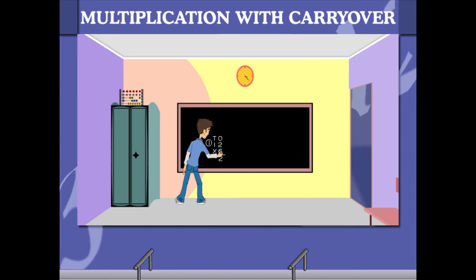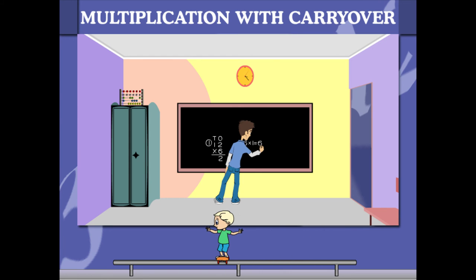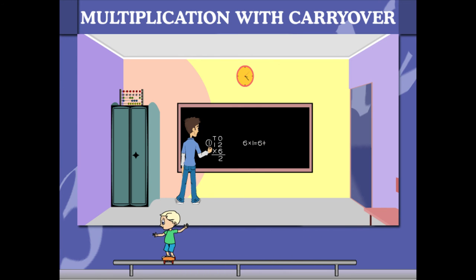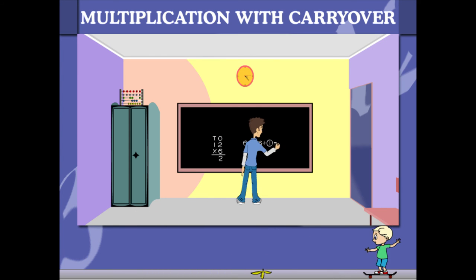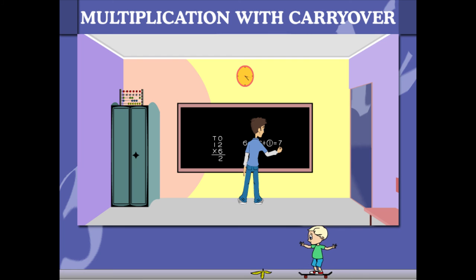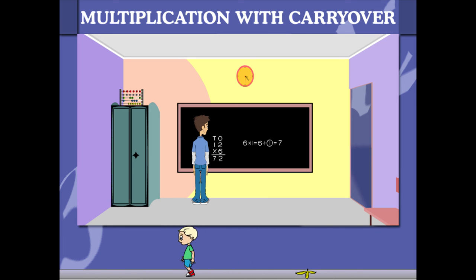He now multiplies the 1 of 12 by 6 and gets 6. He adds the carryover and gets 7. His answer is now 72. Smart work Robin!